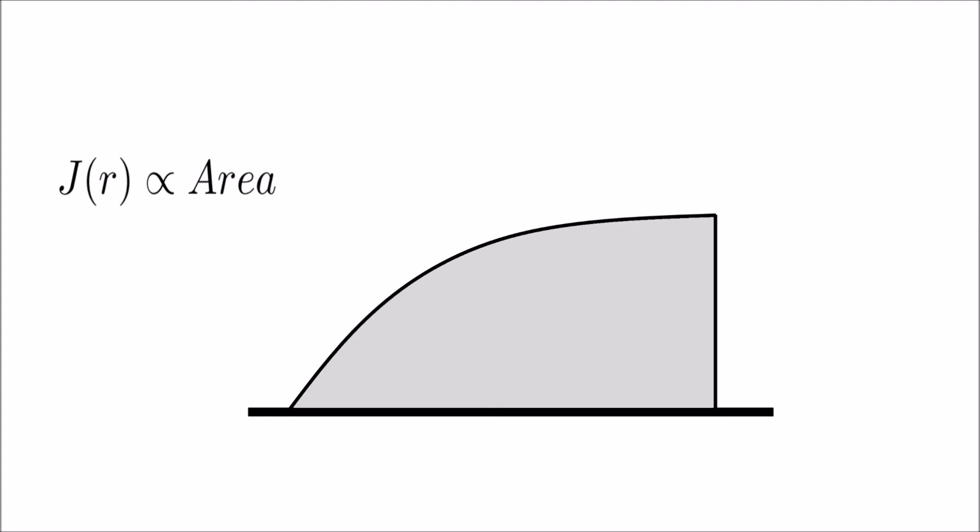On the surface of the drop, the evaporation rate is proportional to the surface area. Surface tension will keep the droplet in a sort of spherical shape. This makes the curvature of the drop near the edge steeper than in the middle, which then means that the evaporation rate per unit radius is higher near the edge than at the center of the drop.